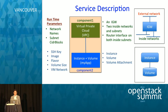For the first service, we have created network name and subnet blocks as parameters, so as you instantiate it at runtime you can provide these values. Similarly, for the second component, we have specified SSH key, image flavor, volume size, and the network to which you want this app to be deployed. So this is a high level model of the service that you want to create and deploy to OpenStack.